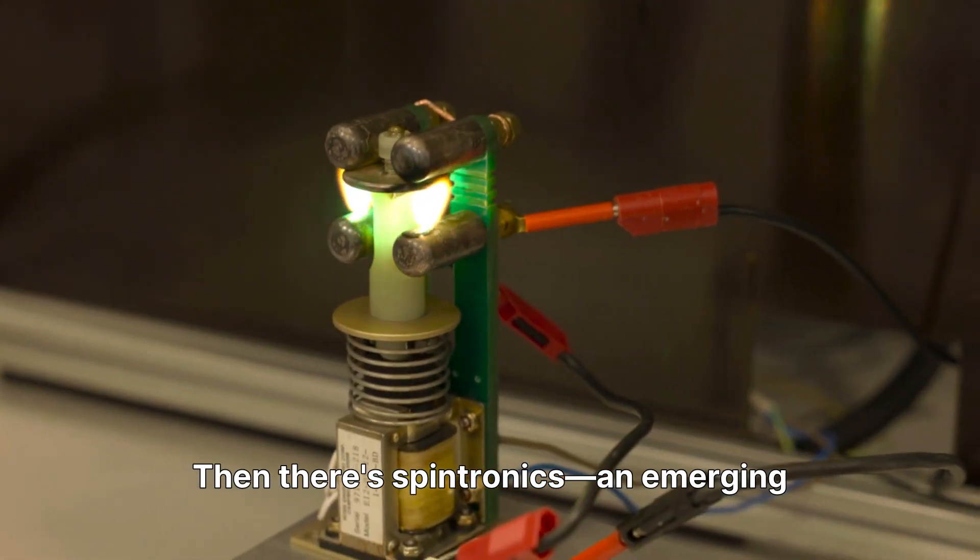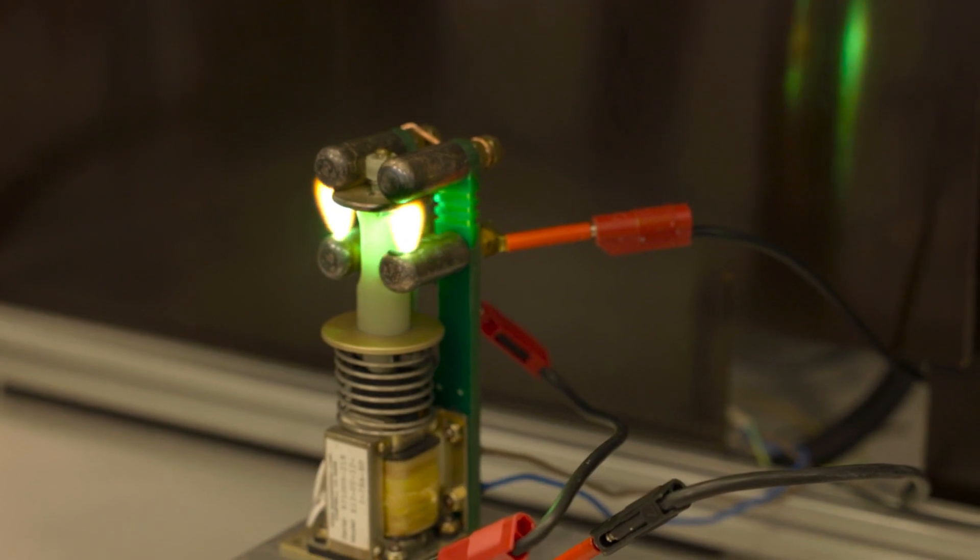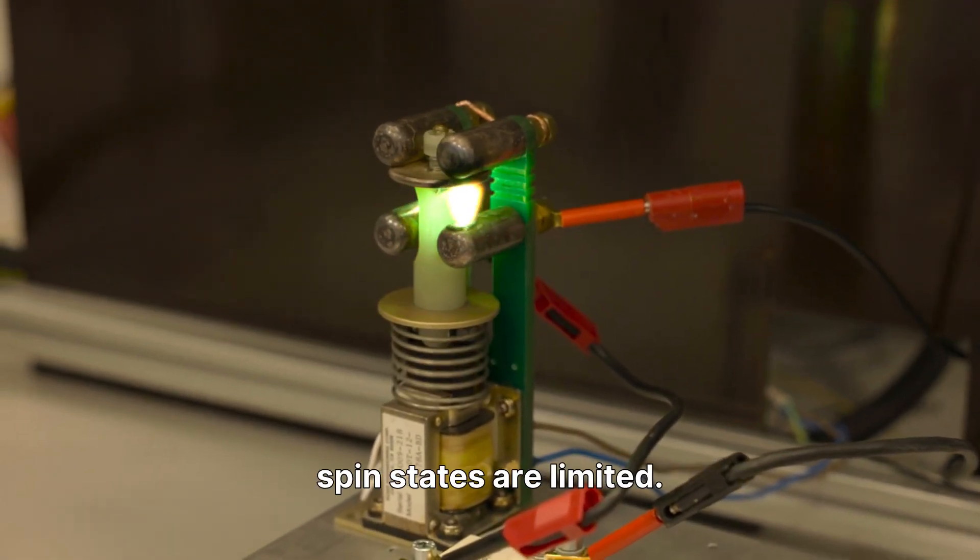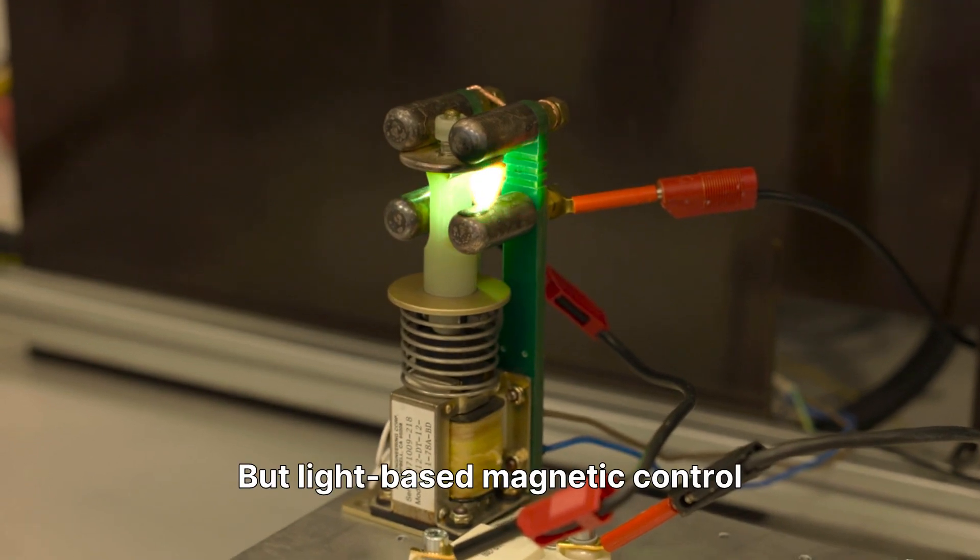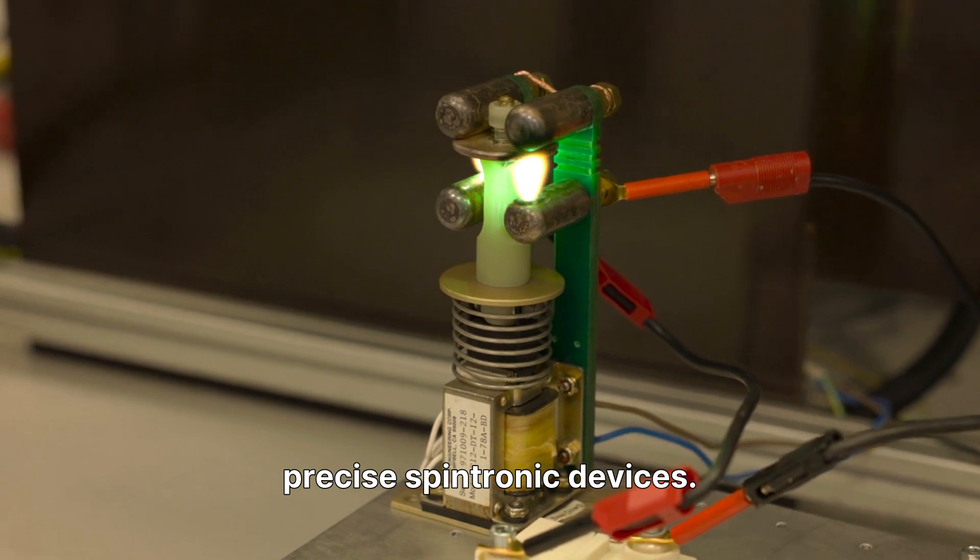Then there's spintronics, an emerging technology that uses electron spin, rather than charge, to store and process information. Current methods of manipulating spin states are limited, but light-based magnetic control could enable faster, more precise, spintronic devices.